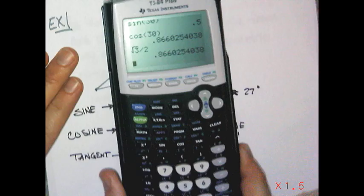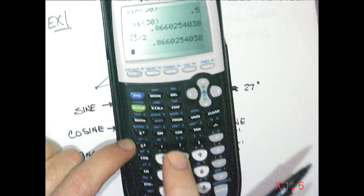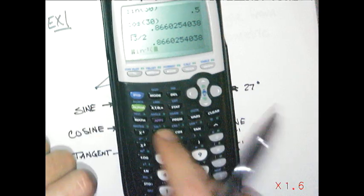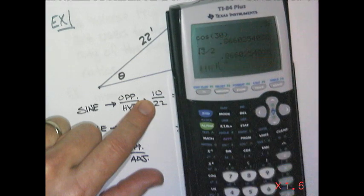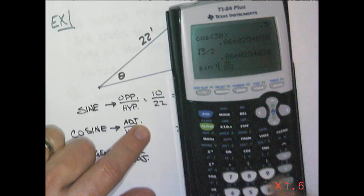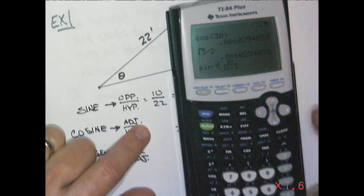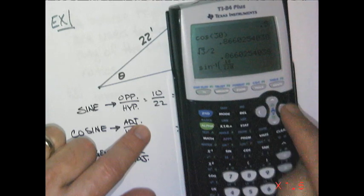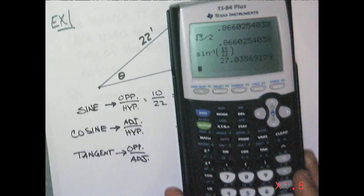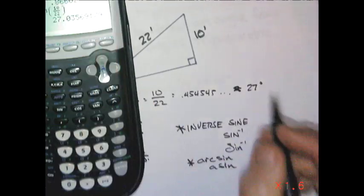So on my calculator, the inverse are right above the normal sine, cosine, tangent. So I hit second sign. I put in my relationship. I'm going to put it in as a fraction, 10 to 22. And I get 27.035. So very close to my 27 degrees that I found on my table.